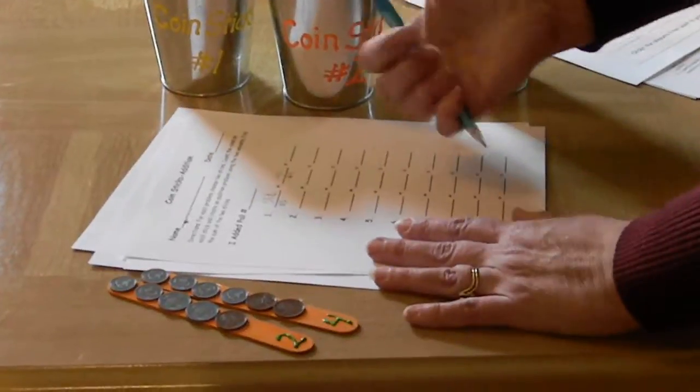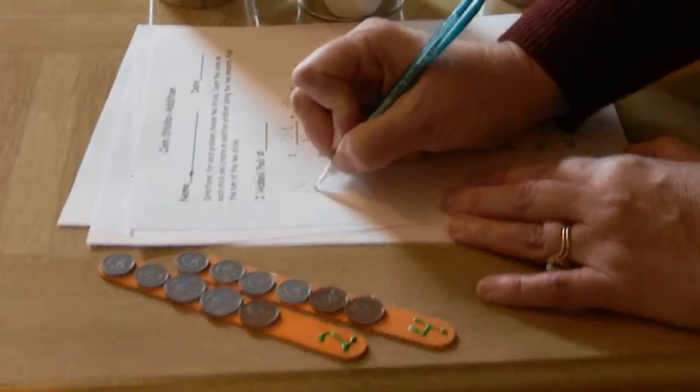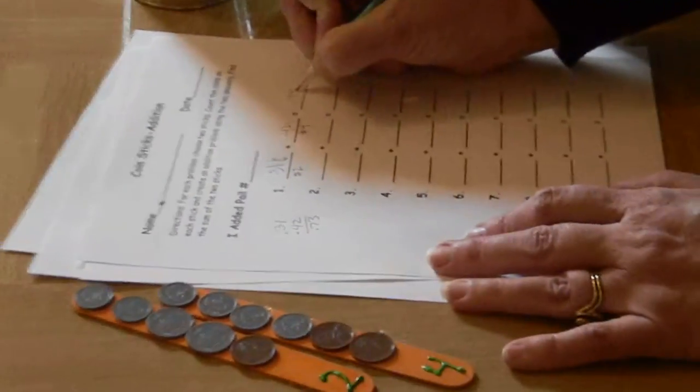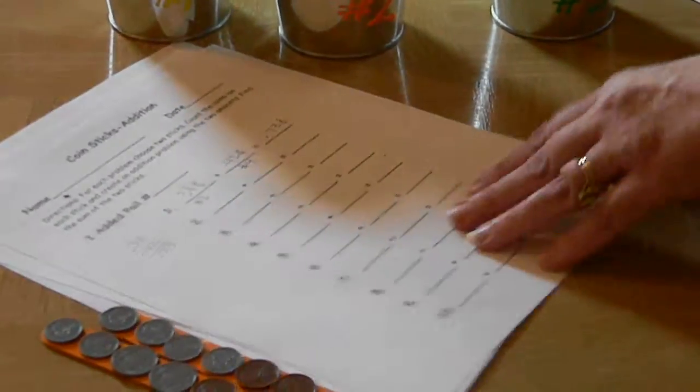Or they could come over here and they could do 31 and 42 cents is 73 cents so then they would put their answer over here and then the same with the subtraction would work the same as that.